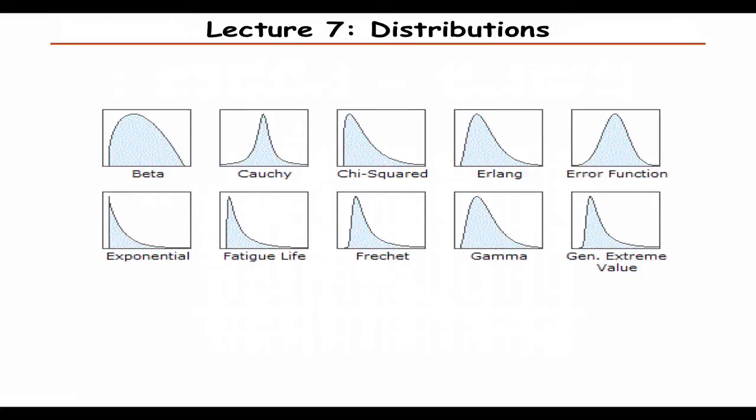Lecture seven goes back to statistics to talk about different kinds of distributions. The most common distribution we'll discuss is the normal distribution — you'll learn about its properties and what the mean and standard deviation mean for that distribution. But if you don't have a normal distribution, you can still calculate mean and variance from a sample, but those will mean something very different depending on what your distribution is.